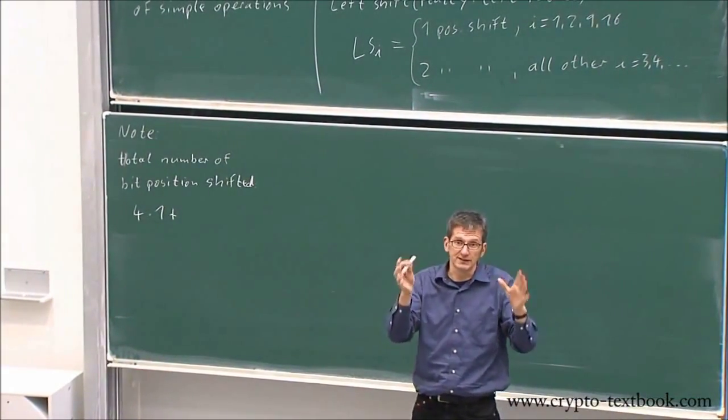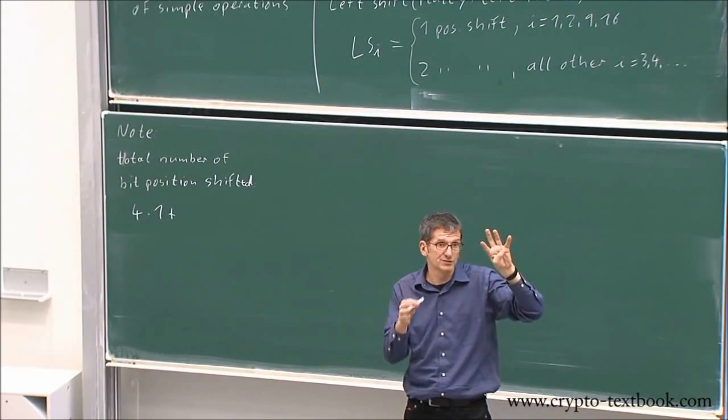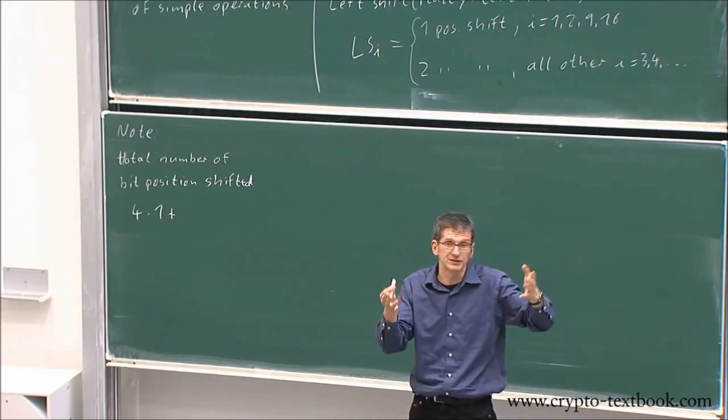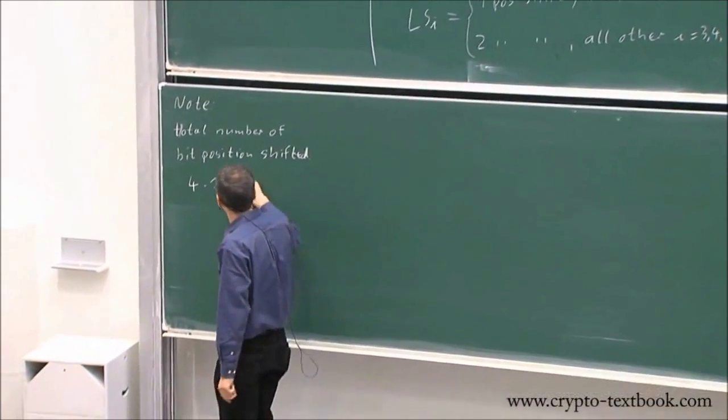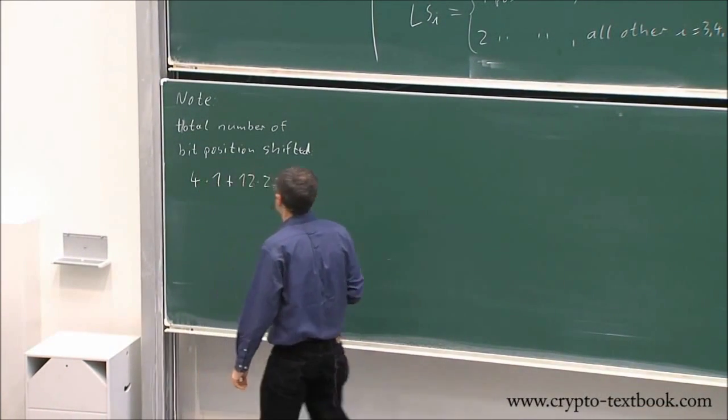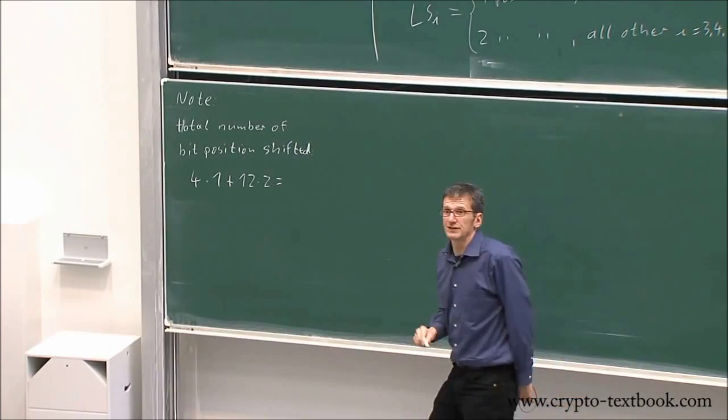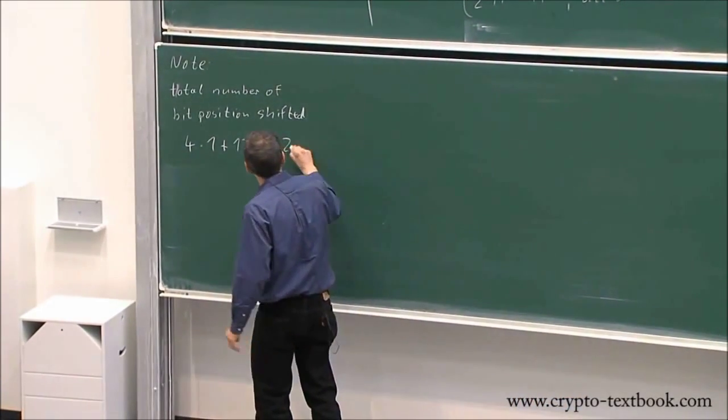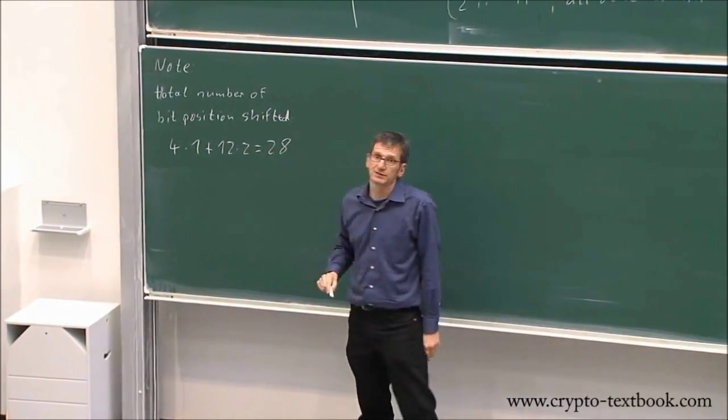Twelve, right? The 16 rounds, four rounds we shift only one position. There's twelve other positions, plus twelve times two. So this is four plus twenty-four is twenty-eight—so 28 positions.